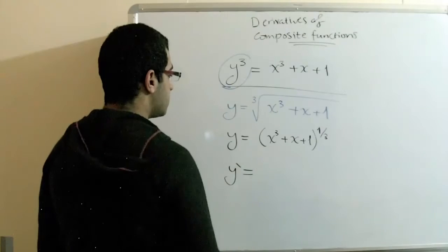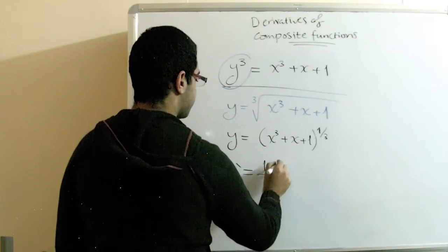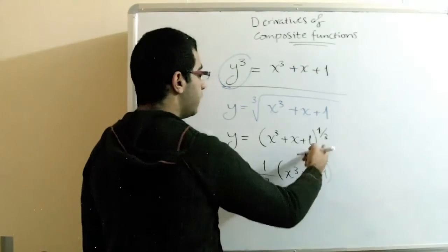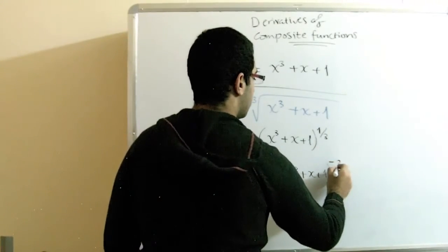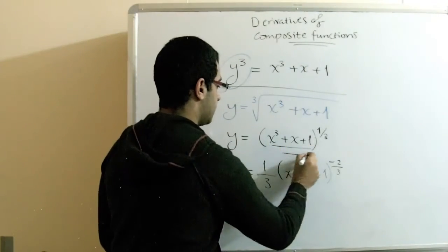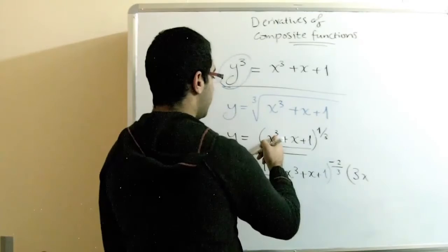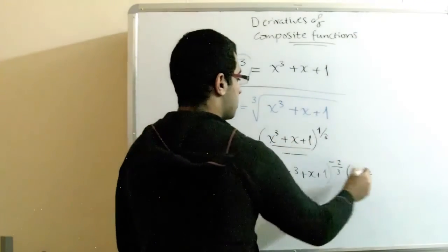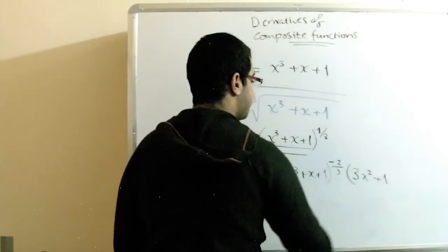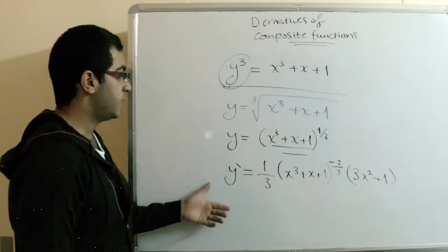We have y dash equals — as we said, we treat this as a single term. We drop 1 over 3, type the expression as it is without any change, and subtract 1 from the exponent to get negative 2 over 3. Then we deal with the inside and get its derivative: we open our bracket, drop the 3 to get 3x to the power 2, and plus 1 gives zero so it is not written. We close our bracket, and we have the derivative of this expression.